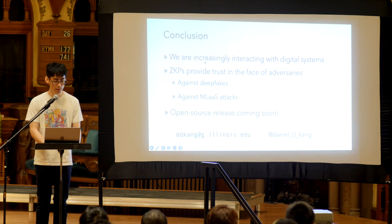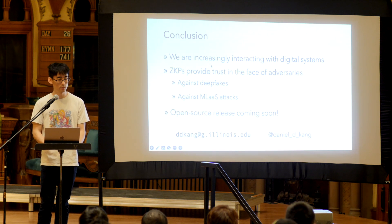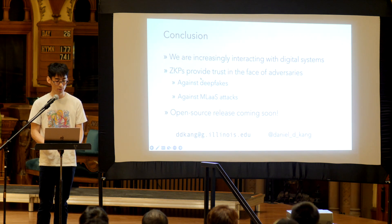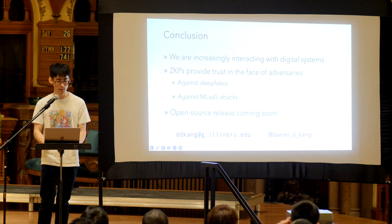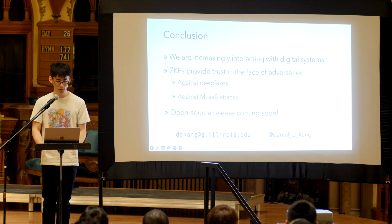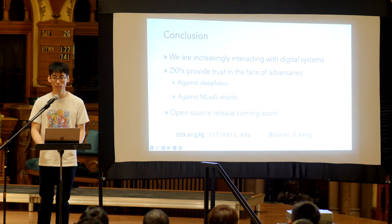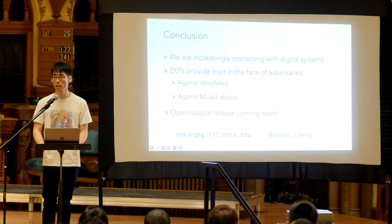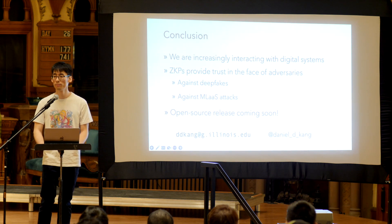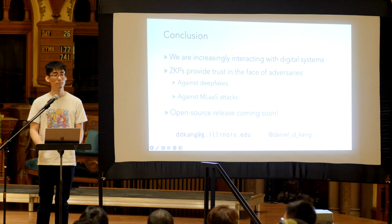In conclusion, we're increasingly interacting with digital systems, and zero-knowledge proofs provide trust in the face of adversaries — including against deepfakes and ML service attacks. We have an open source release coming soon, and we're somewhere between 100 to 10,000 times faster than some of the prior work in this space. My email and Twitter handle are here, and I'm happy to take questions now and will also be around for the working group sessions.